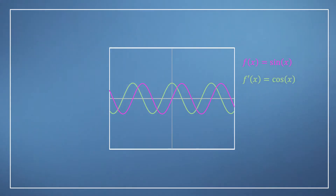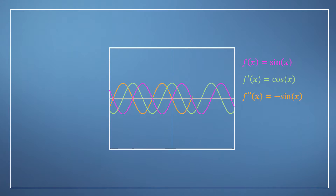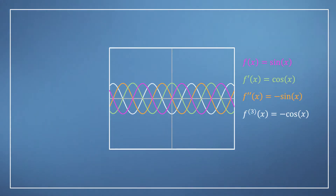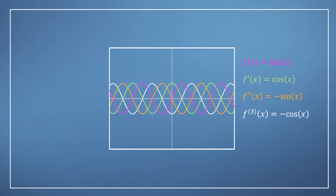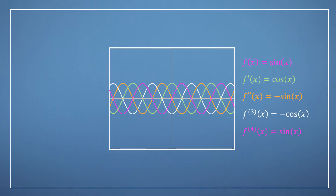It turns out that the derivative of sine x is actually just cosine x. Now what happens when we differentiate cosine x? We get minus sine x. Differentiating a third time gives us minus cosine x, and then differentiating a fourth time brings us all the way back to our original function, sine x. And then the pattern, of course, repeats.